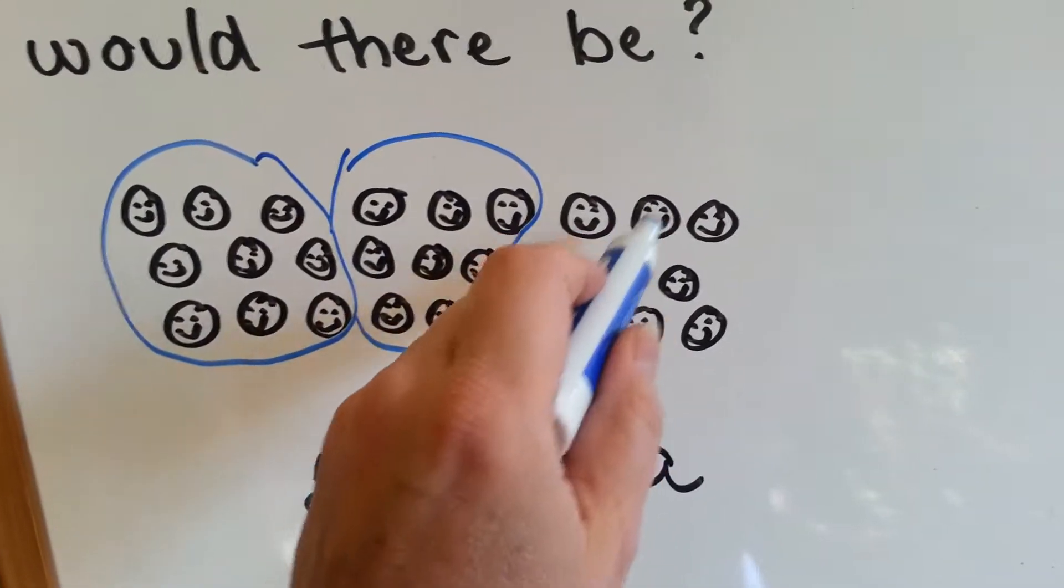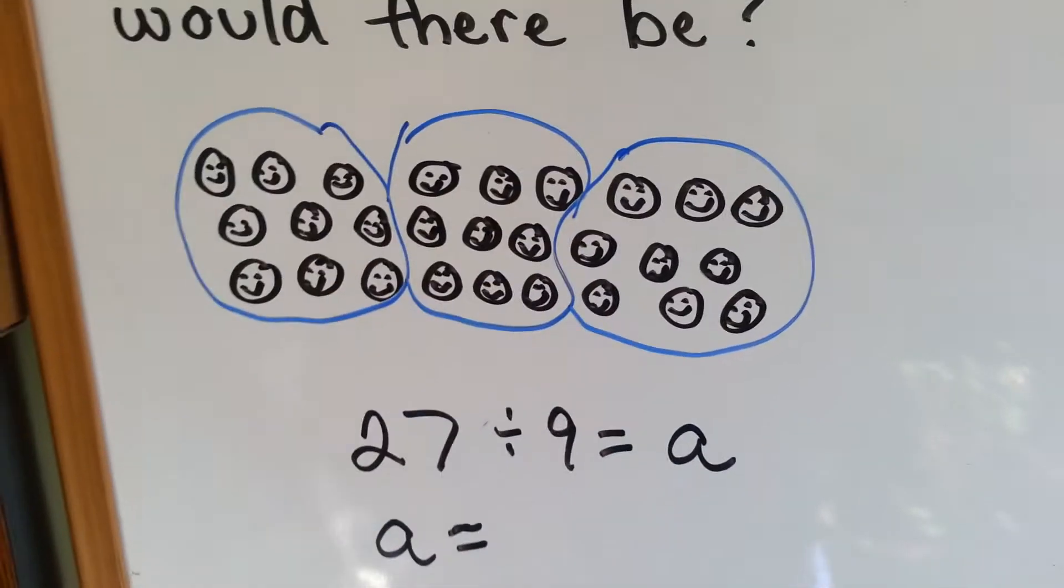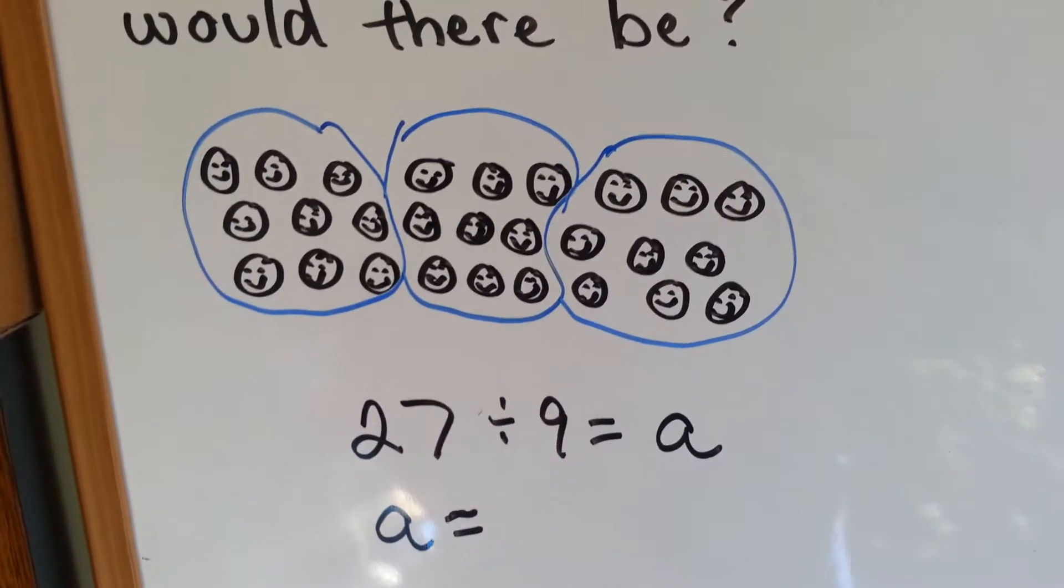1, 2, 3, 4, 5, 6, 7, 8, 9. That's the last group. How many groups do we have? 3.